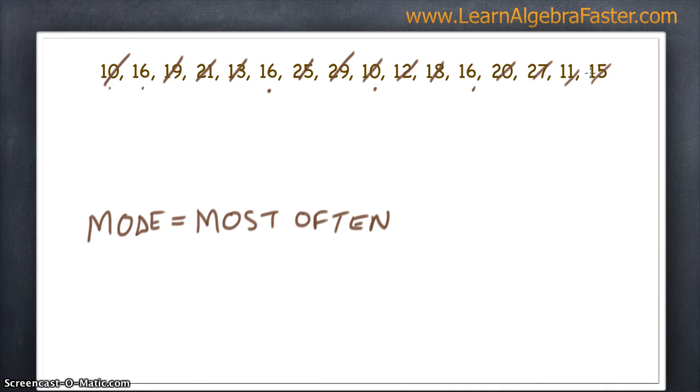What I did right there was I started from left to right and started with the first number, then checked the rest of the numbers to see how many times it happened. Actually, 10 happened twice in the set. But as soon as I moved to the second number, which is 16, and I saw that it had more occurrences in the set, I went ahead and scratched off number 10 because it's no longer a possibility.